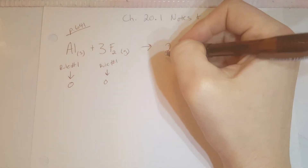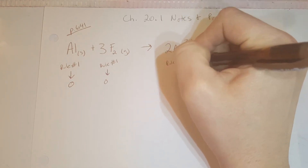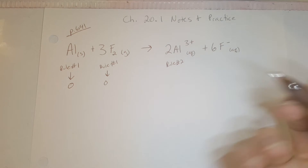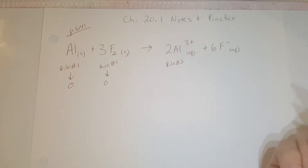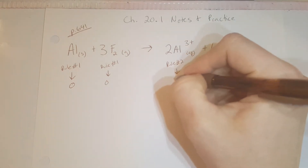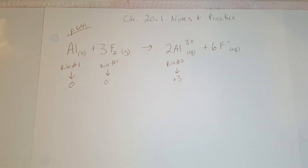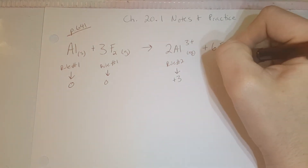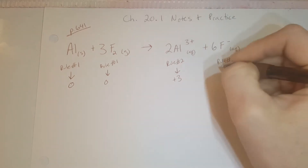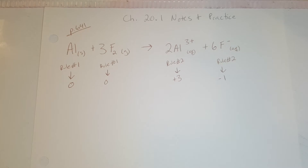Over here on the product side, because of rule number two, our aluminum ion has an oxidation number that's the same as its charge, so it has an oxidation number of positive three. And also because of rule number two, our fluorine ion has an oxidation number of negative one.